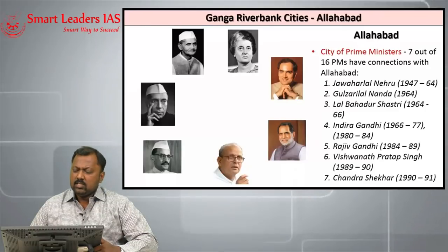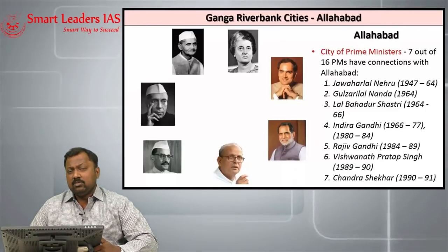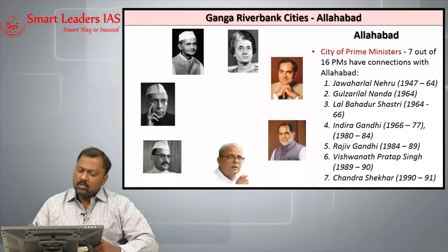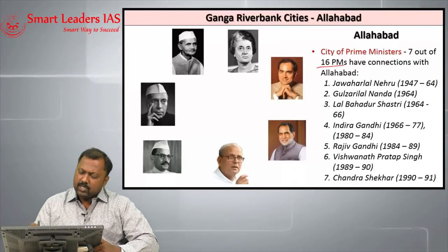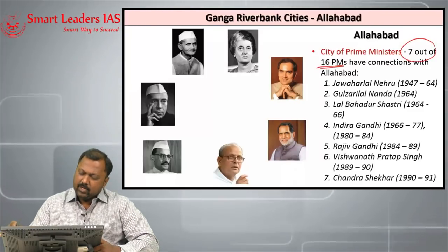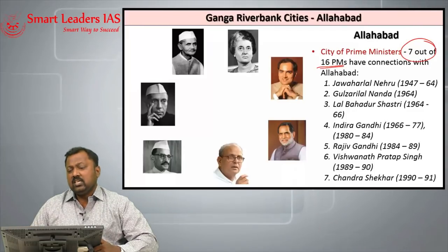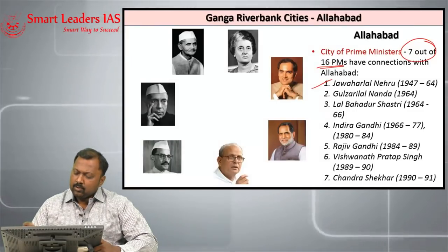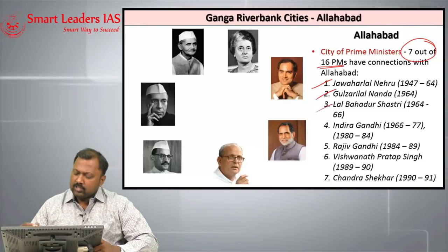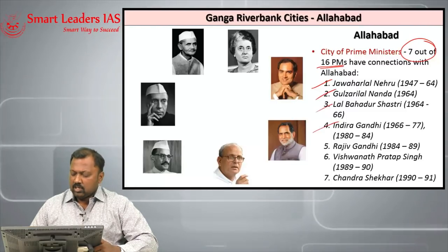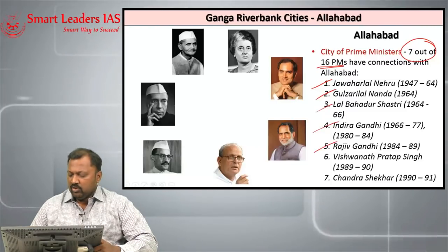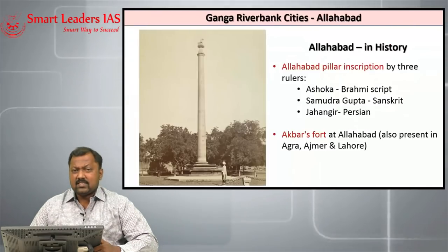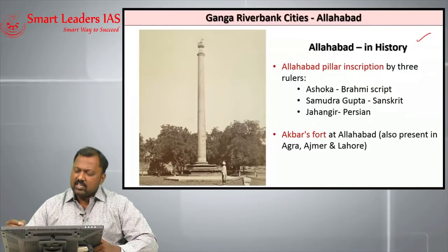Allahabad is also known as the city of Prime Ministers. Out of 16 Prime Ministers as of today, 7 have come from Allahabad. They include Jawaharlal Nehru, Gulzarilal Nanda, Lal Bahadur Shastri, Indira Gandhi, Rajiv Gandhi, V.P. Singh and Chandrashekar.